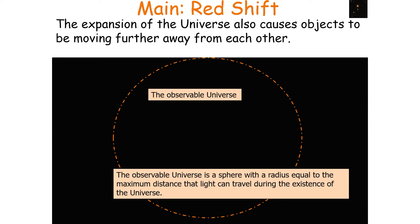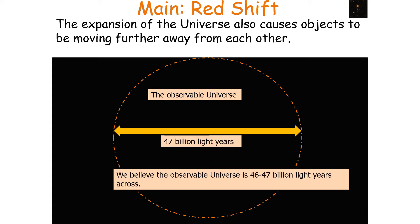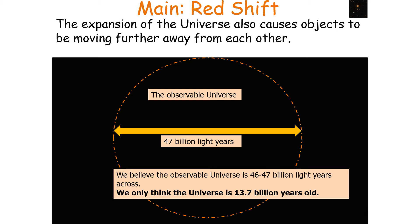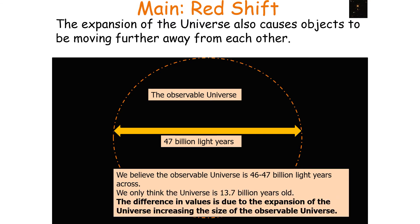The observable universe is a sphere with a radius equal to the maximum distance that light can travel during the existence of the universe. We believe the observable universe is 46 to 47 billion light years across. However, we only think the universe is 13.7 billion years old. The difference in values is due to the expansion of the universe increasing the size of the observable universe.